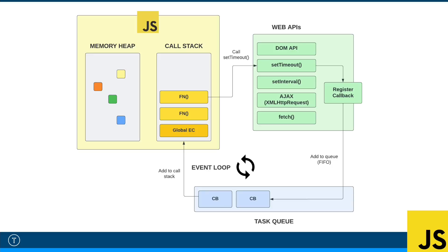Any callbacks in the task queue have to be put on the stack to be executed, and this is where the event loop comes in. The event loop continuously runs to check if there's anything in the task queue. If there is, once the call stack execution is complete and the stack is cleared, the event loop picks up that task from the queue and puts it on the stack to be executed — that's the event loop's sole purpose. Each task in the queue is executed at the moment a new iteration of the loop begins, going through iterations also called ticks. Tasks added after an iteration begins won't run until the next tick.